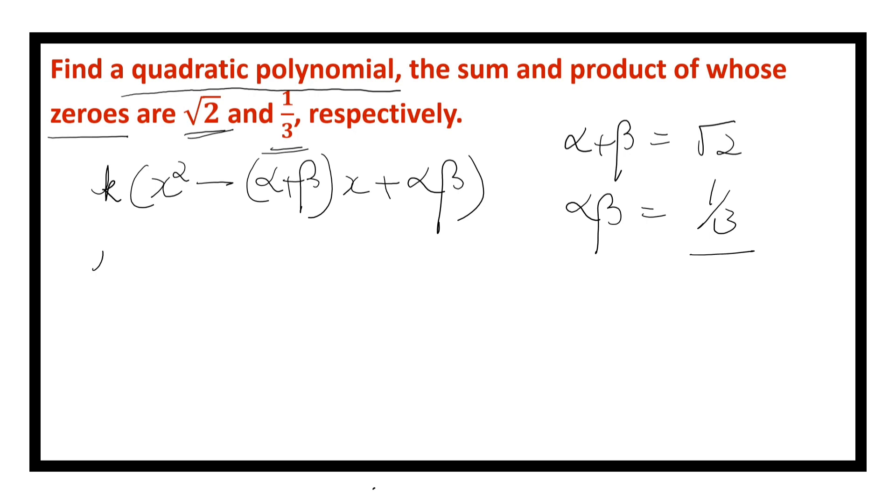Now let us substitute the values. k into x square minus sum of the zeros, square root of 2 into x plus product of zeros, 1 upon 3.